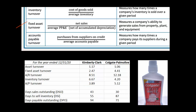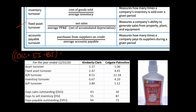You might wonder how to calculate purchases from suppliers on credit for the payable turnover formula. You take the company's cost of goods sold, add their ending inventory balance, and subtract their beginning inventory balance — that's how you calculate purchases from suppliers on credit. Now let's get back to the analysis of these working capital ratios, and I recommend converting the turnover ratios to number of days rather than just thinking about how many times a year the company sells through its inventory.